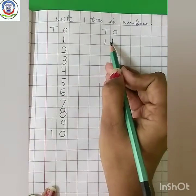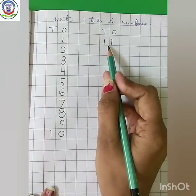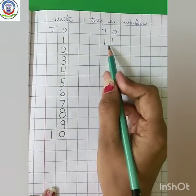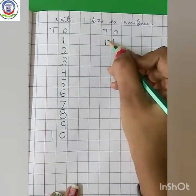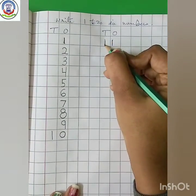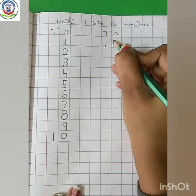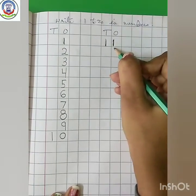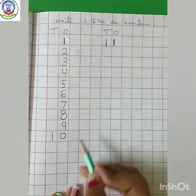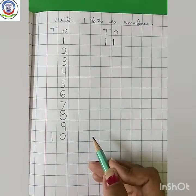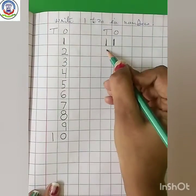Now look here. 10 plus 1 equals 11. Let's write. Standing line — 1. Another standing line — 1. 11. 10 plus 1 is 11.